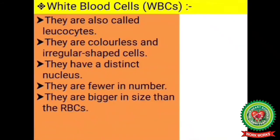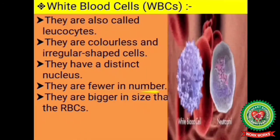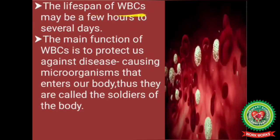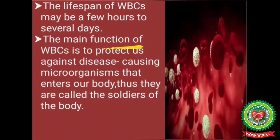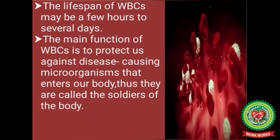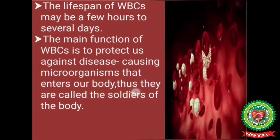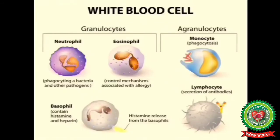White blood cells, also called leukocytes, are colorless and irregularly shaped cells with a distinct nucleus. They are fewer in number but bigger in size than RBCs. The lifespan of WBCs may be a few hours to several days. The main function of WBCs is to protect us against disease-causing microorganisms that enter our body, which is why they are called the soldiers of the body.